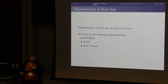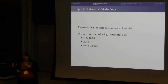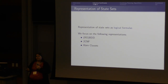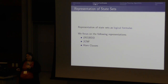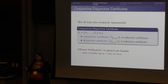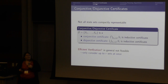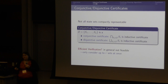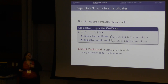Of course, we are talking about very large state sets because the state space is exponential, so we have the problem of how we can represent them efficiently. We chose to use logical formulas — more concretely we are focusing on BDDs, 2CNF formulas, and Horn clauses, although we also have in the paper more general criteria on which type of representations actually work. Not all state sets are compactly representable in these formalisms, but sometimes we can implicitly define them as a union or intersection of several state sets. That is what we call conjunctive or disjunctive certificates.